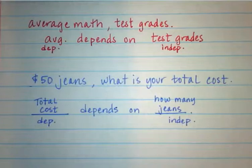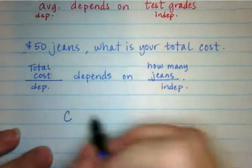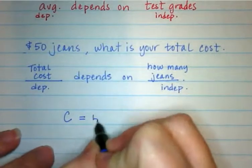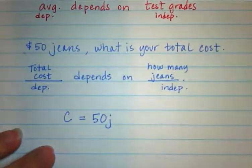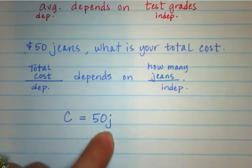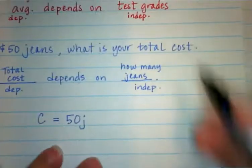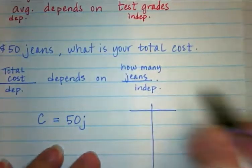We could even go further and write this as an equation. Because we know that your cost is going to equal $50 for every pair of jeans that you buy. So cost equals $50 times the number of jeans. So we could even go over here and fill this in.